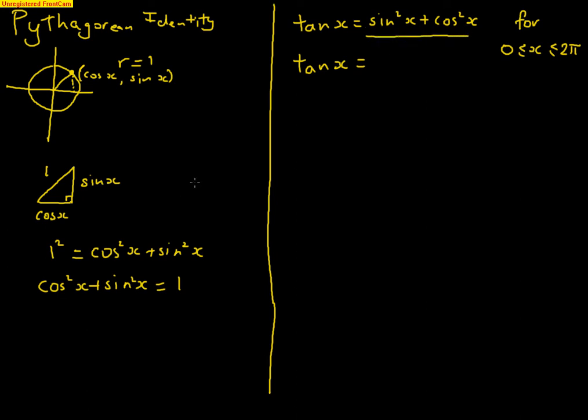But for now, we know that tan of x is equal to sin squared x plus cos squared x. That, we know is equal to 1. So, now we have an equation that we can actually solve. We know that tan of pi on 4 is equal to 1.